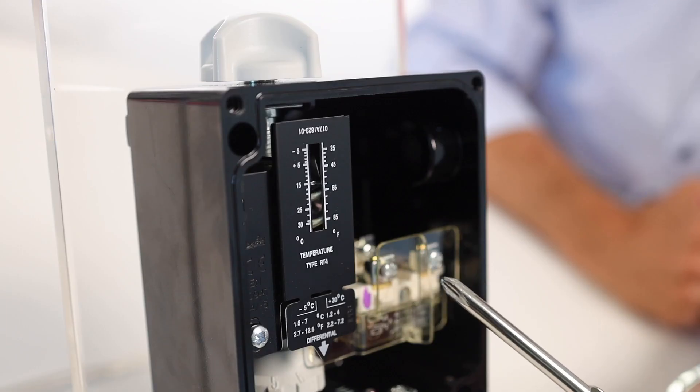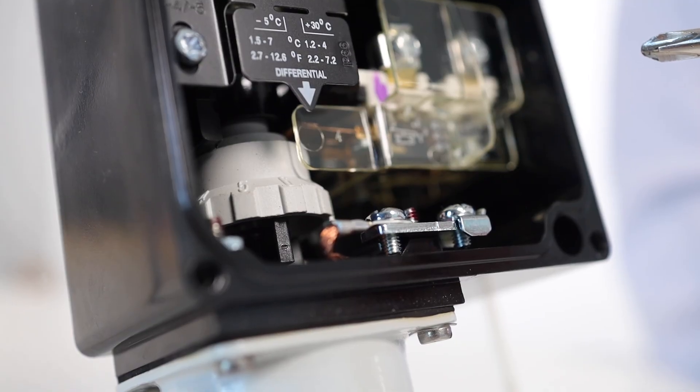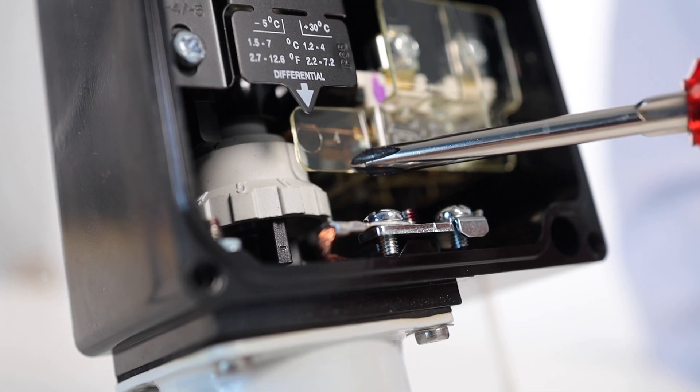In this example, we'll set the level to 15 degrees Celsius. Inside, you can also find the differential setting nut. The setting nut scale goes from 1 to 10.